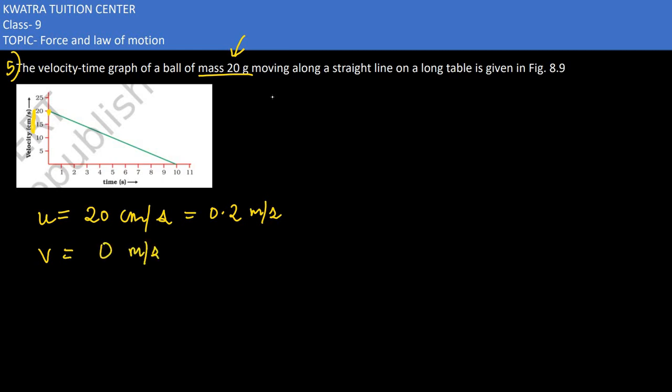Now we will find the acceleration since time is given. According to the graph, time is 10 seconds. To find acceleration: a = (v - u) / t = (0 - 0.2) / 10 = -0.2 / 10 = -0.02 meters per second squared.